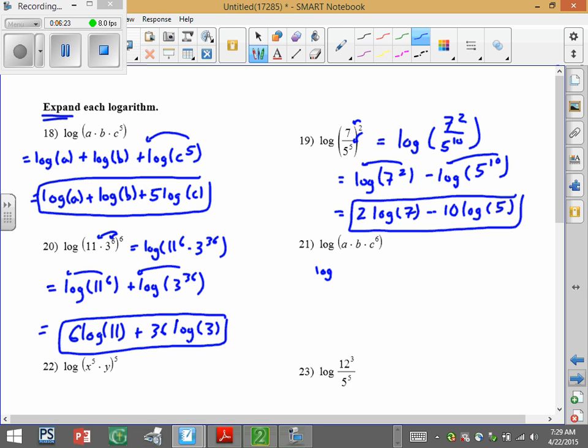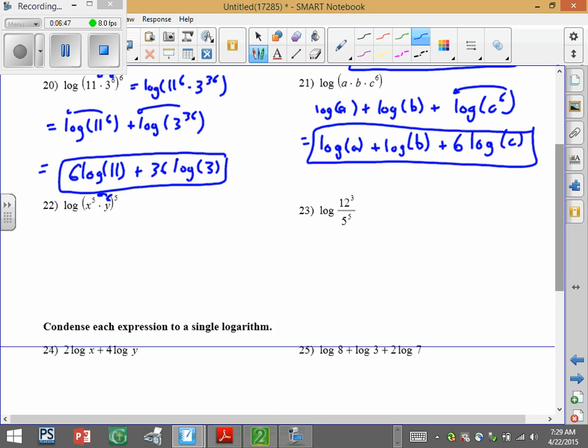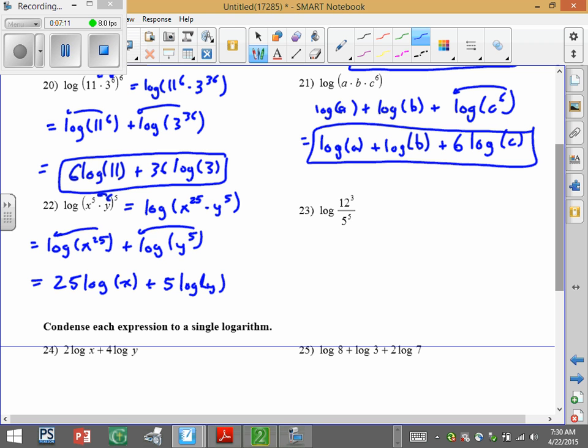Here we have log of A plus log of B plus log of C to the sixth. Put that exponent and bring it down. So we end up with log of A plus log of B plus 6 log of C. Here, we'll put that 5 all the way through. So we have log of A plus log of C to the fifth times Y to the fifth. Bring those down in front. So that's your answer to 22.